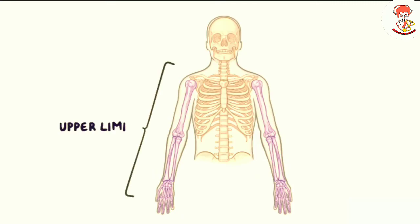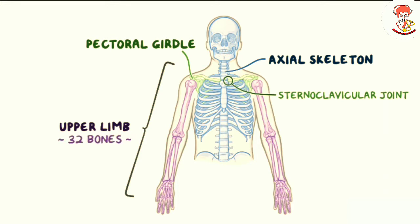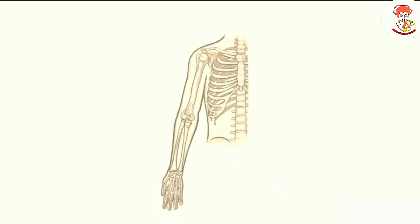The bones of the upper limb. The upper limb is connected to the axial skeleton, which is the cranium, vertebral column, and associated thoracic cage, by a bony pectoral girdle at the sternoclavicular joint, which is the connection between the clavicle and sternum. Each upper limb is made up of 32 bones and has different regions.